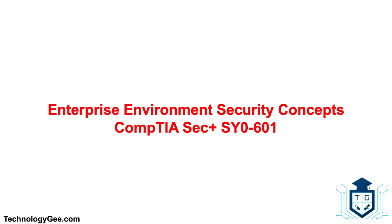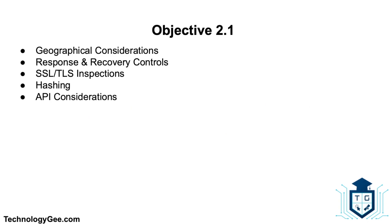What's up everybody, this is your boy Tech G back with another video to help you successfully pass the CompTIA Security Plus 601 certification exam. In this video you're going to learn about enterprise environment security concepts such as geographical considerations, response and recovery controls, SSL/TLS inspections, hashing, and API considerations.